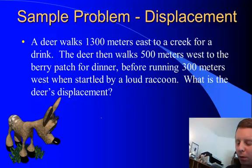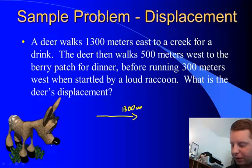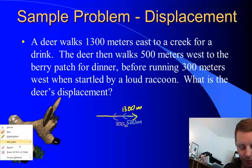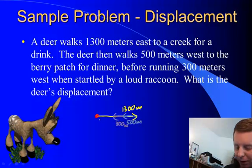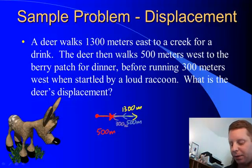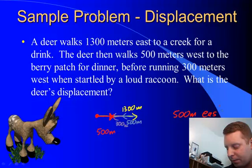If we have the same problem of a deer walking 1,300 meters east to a creek for a drink, then 500 meters west to a berry patch for dinner, before going 300 meters west when scared by a raccoon, what is the total displacement? Well, to find that out we go from our starting point to our ending point and draw a straight line from start to finish. That red arrow is our displacement vector. If we went 1,300 meters east, then 500 west, then 300 meters west, the displacement must be 500 meters. So our displacement vector must be 500 meters east.